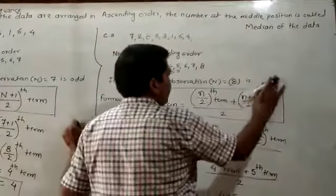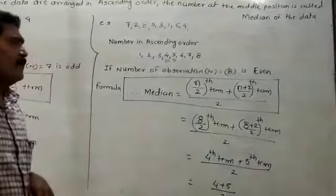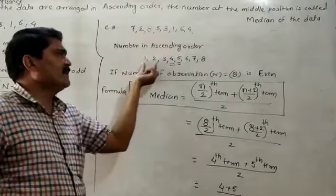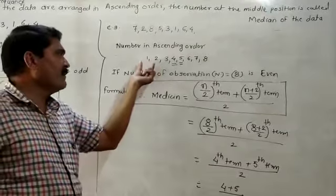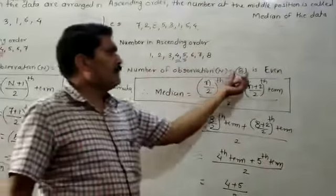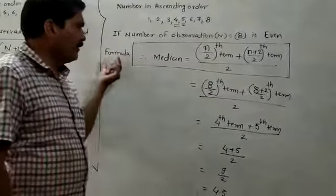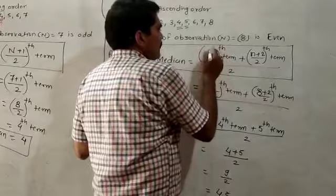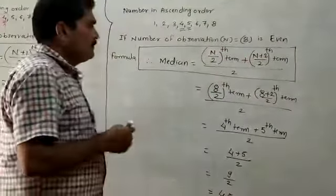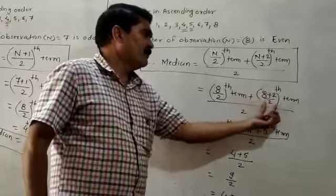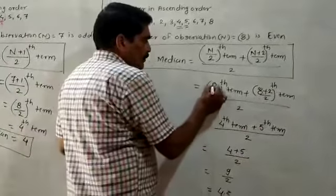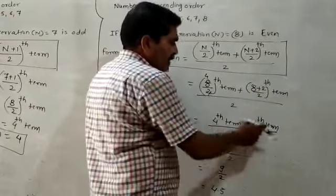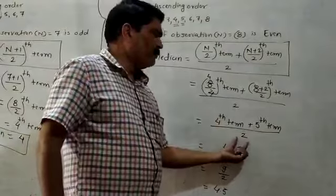If the number of observations are even, the data rearranged in ascending order is: 1, 2, 3, 4, 5, 6, 7, 8. The number of observations n equals 8, which is an even number. For even observations, the formula for the median is: [(n/2)th term + (n/2 + 1)th term] / 2. With n=8: 8/2 = 4th term, and (8+2)/2 = 5th term. So we need the 4th and 5th terms.